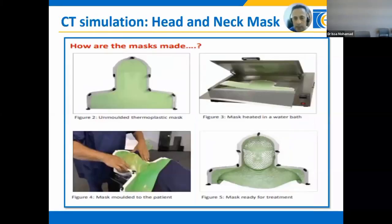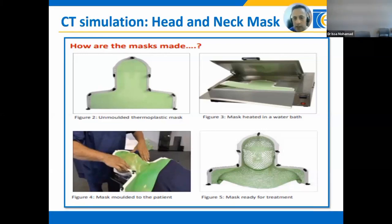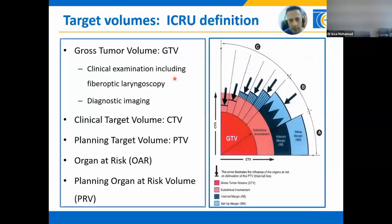Now the technical part: CT simulation. We simulate patients in the supine position with a customized thermoplastic head and neck mask. We give IV contrast and scan with 2 mm slice thickness, then transfer CT images to the planning software. According to ICRU, you need to define your GTV, CTV, and PTV, contour organs at risk, and add planning organ at risk volumes.